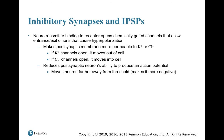In inhibitory synapses, neurotransmitter binding to chemically-gated channels allows ions to enter or exit, causing hyperpolarization. The postsynaptic membrane becomes more permeable to potassium or chloride. If potassium channels open, potassium leaves, making the inside more negative; if chloride channels open, chloride enters, also making it more negative. This reduces the postsynaptic neuron's ability to generate an action potential, since it must start from a more negative baseline to reach threshold.